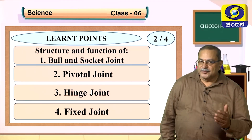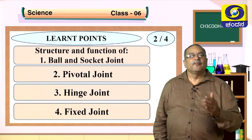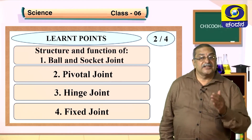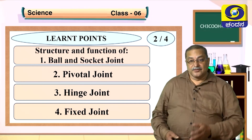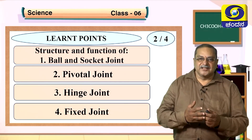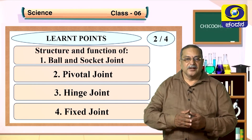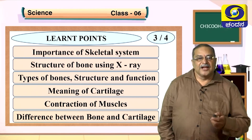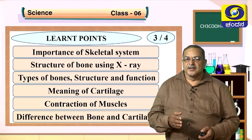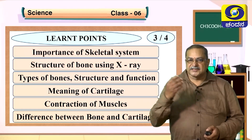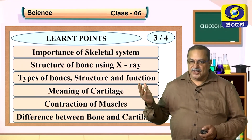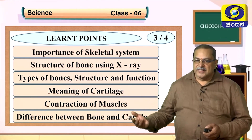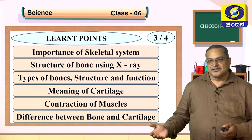In the second session we learned about the structure and function of ball and socket joint, pivotal joint, hinge joint, and fixed joint. We also learned how to make the joints and how they function. In the third session we learned about the importance of the skeletal system, the structure of bone using X-ray, and types of bone structure and function.